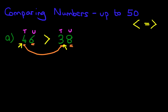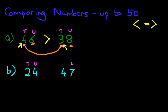Now let's look at the next example and get a bit more practice in. Let's suppose we have these two numbers: we've got 24 and we've got 47. I want you to label them again with tens and units. For number 24, the 4 is a unit and the 2 is a ten. For number 47, the 7 is a unit and the 4 is a ten. Now the first thing, as we said before, we're going to compare the tens.